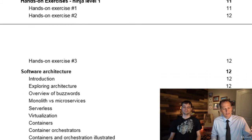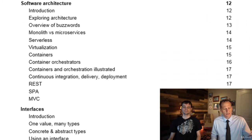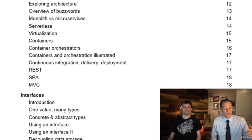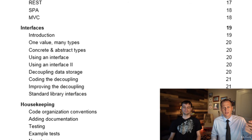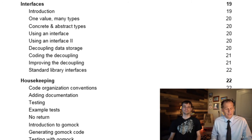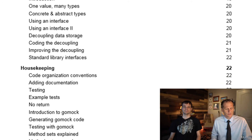We'll give you a lot of hands-on exercises in this course. We're going to go over software architecture and a lot of the big buzzwords around architecture — explaining concepts like monolith versus microservices versus REST versus SPA versus MVC. We're also going to go through interfaces and how you can use interfaces to decouple your code and make your code grow with your code base.